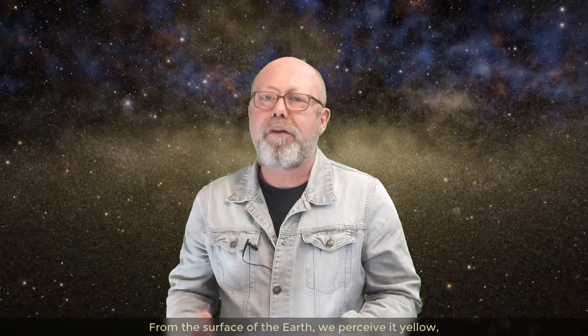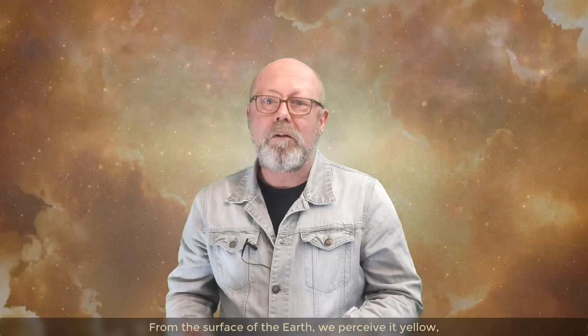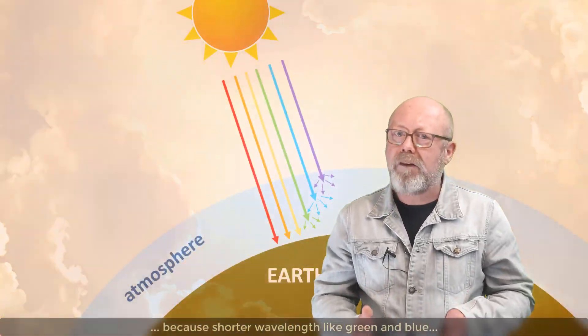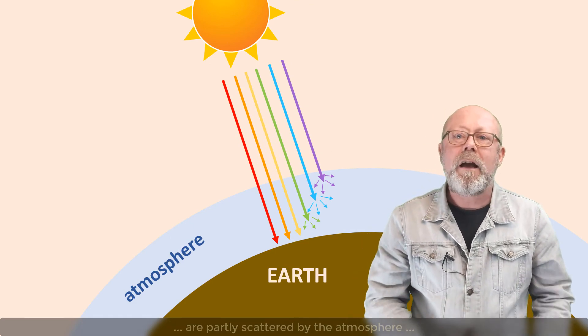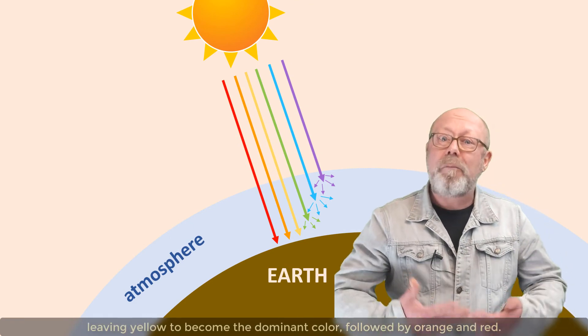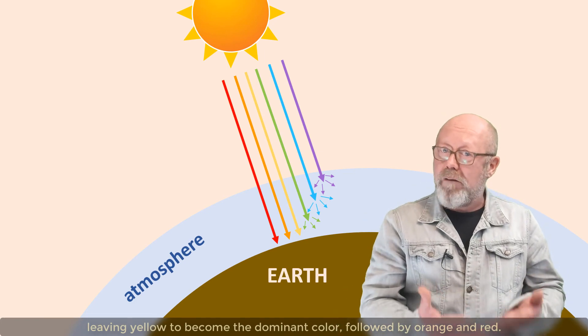From the surface of the Earth, we perceive it yellow, because shorter wavelengths, like green and blue, are partly scattered by the atmosphere, leaving yellow to become the dominant color, followed by orange and red.